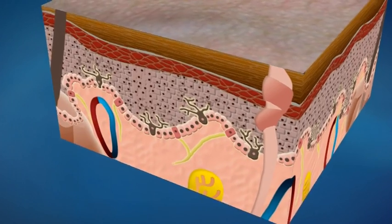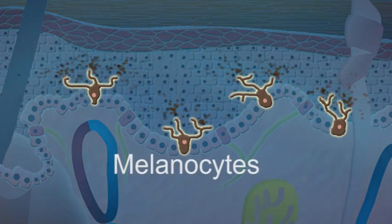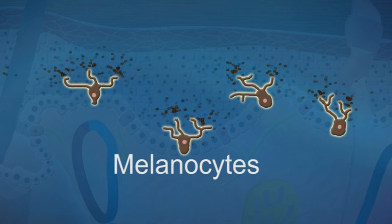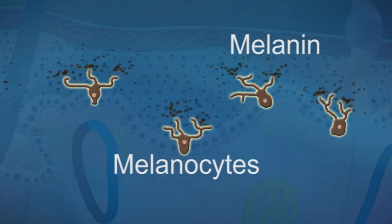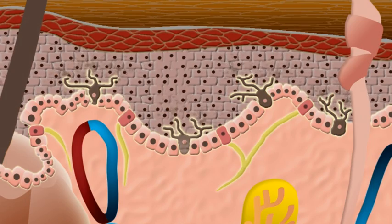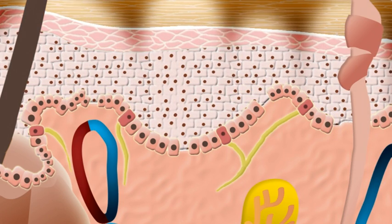Vitiligo is characterised by a chronic and progressive loss of function of the epidermal melanocytes, or pigmentation-producing skin cells. Melanocytes are found in the epidermal layer of our skin and in the hair follicles, and produce melanin, the pigment that gives colour and protection to our skin and hair. What causes the loss of melanocytes in vitiligo is still not well understood and many hypotheses have been proposed.